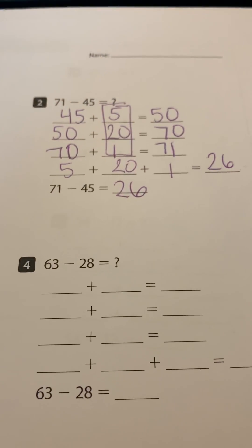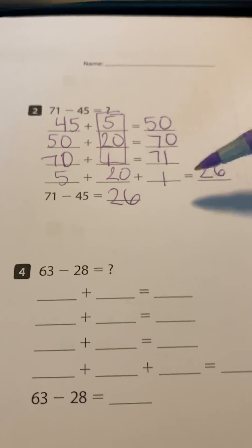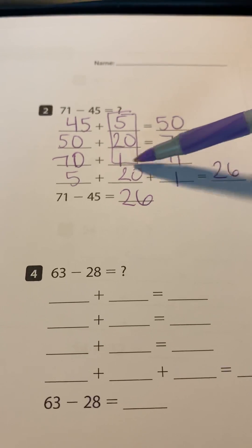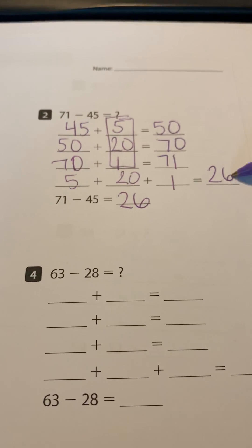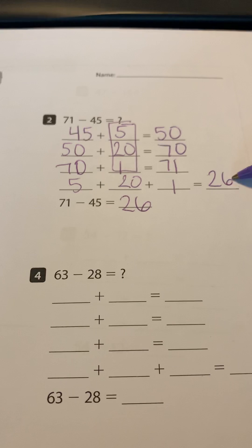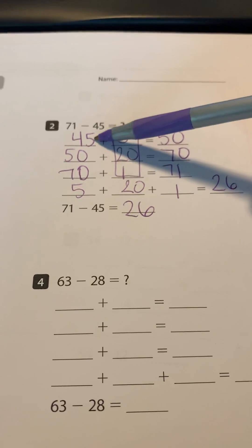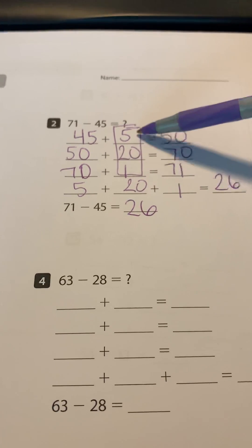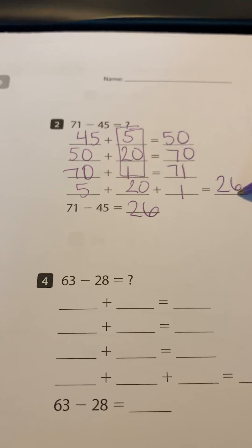So 71 minus 45 is equal to 26. You already did the work right here. It's just telling you to rewrite it so that way you know what your answer is. Okay, so that's what you added to get from 45 to 71. You added five and 20 and one to get to 26.